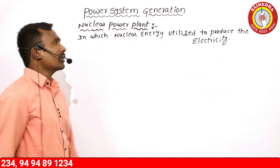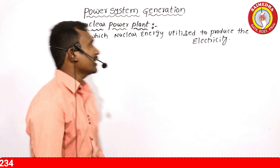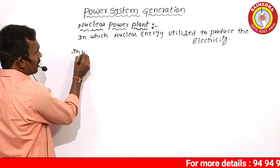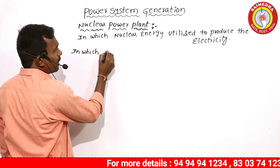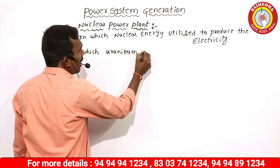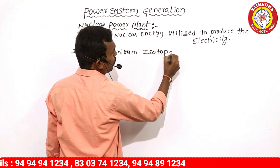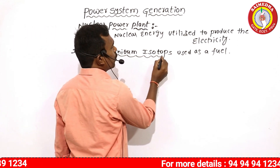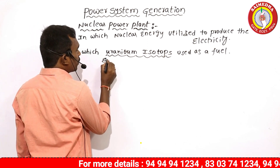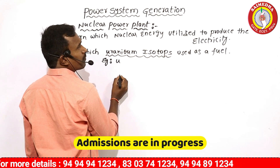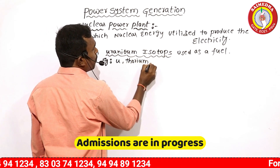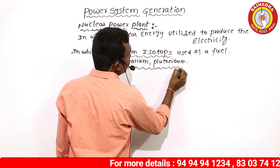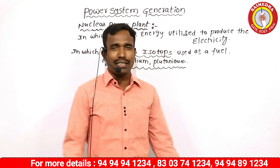This power plant uses uranium isotopes as fuel. The three fuels used are: first, uranium; second, thorium; and third, plutonium. Using these, we produce electricity in a nuclear power plant.